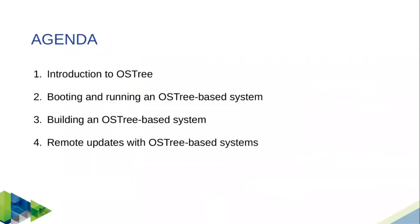Let's start the talk. We're going to cover four topics. First, what is OSTree? Then we're going to discuss how we can boot OSTree on an embedded device — how does it work? Because OSTree is basically a content-addressable management system, kind of like Git. Then how can we build an embedded Linux system with OSTree, and finally how we can use it as a remote update system, which is one of the big advantages of an OSTree-based system.